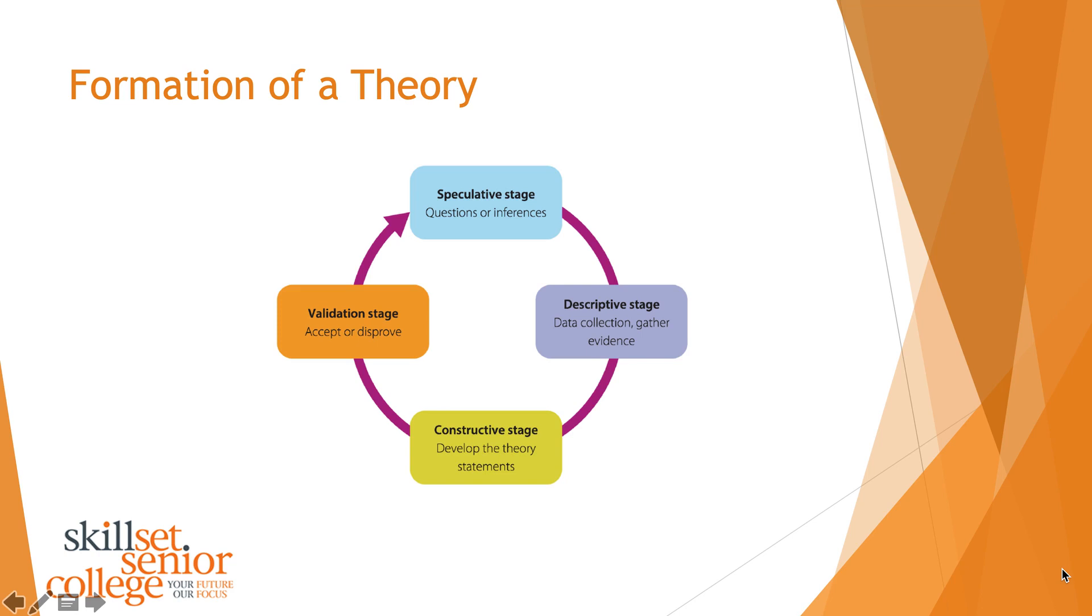The formation of a theory is important and it's circular like the scientific method I just described. You have your speculative stage, you ask questions about a subject and try to do some background research. Then your descriptive stage, you collect your own data and gather your own evidence. Then your construction stage, what does your evidence say about this theory. And then your validation stage, you repeat your experiment or have others look at your work and ensure that what you've done is correct. Then you go back to the speculative stage. Hopefully by now you'll get an idea that science is never finished. You're always going to add more and more data to strengthen the evidence that you have already to formulate your theory.